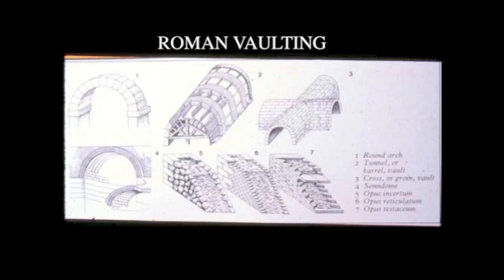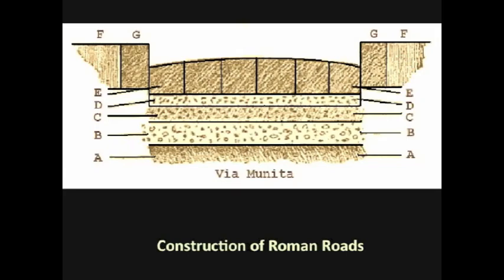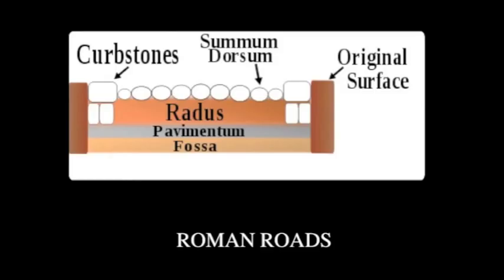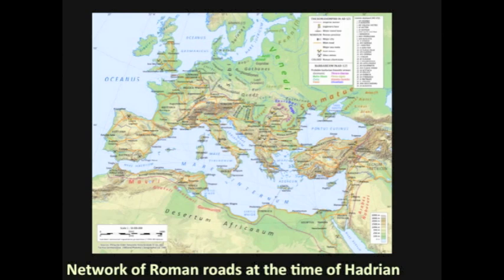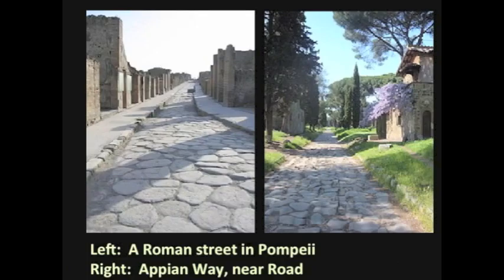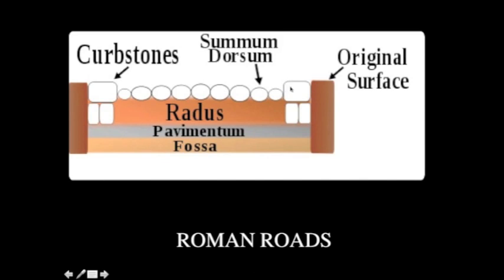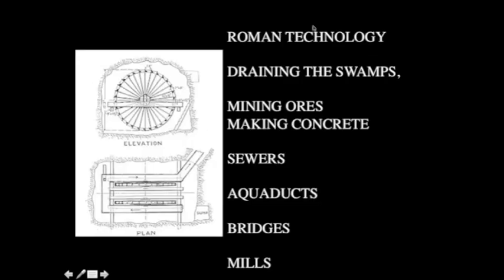Roman architecture uses brick and concrete, which are cheap and easily available everywhere — hence Rome expands its domain. Rome also had a vast network of roads, maybe about eight feet deep, so they're still fine. You can still find roads like the Appian Way or the Aurelian Way, and they're pretty much as good as any modern street because they're so solidly built — different kinds of stones, flat ones to walk on, others through which water drains layer upon layer. Roman technology included draining swamps, mining ores, making concrete, building sewers, having aqueducts, building bridges, and making mills that run through water power.